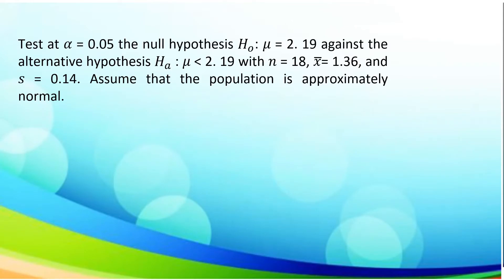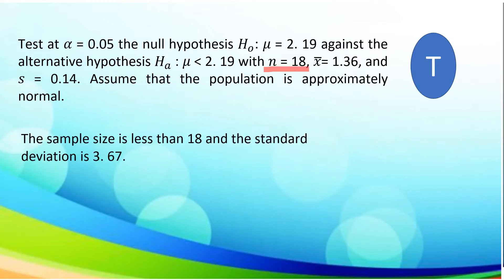Now let us have another set of situations. Test at alpha 0.05 the null hypothesis, which is mu is equal to 2.19, against the alternative hypothesis, which is mu is less than 2.19, with a sample of 18, mean of 1.36, and standard deviation of the sample of 0.14. Assume that the population is approximately normal. Based on the given, n is 18, which is less than 30. The test statistic to apply is T-test.